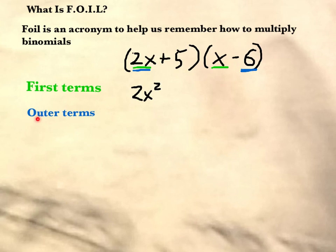The O in FOIL stands for outer terms, so that would be the very first and the very last. When I multiply 2x and minus 6, I get minus 12x.